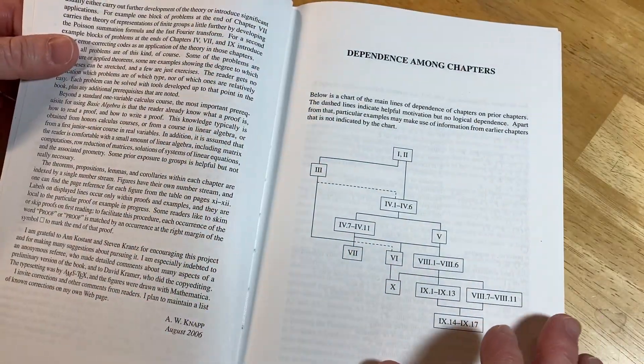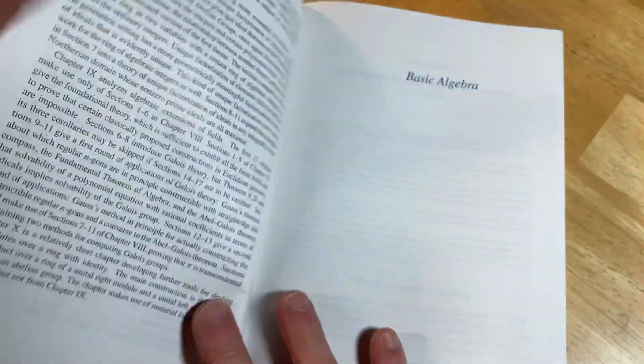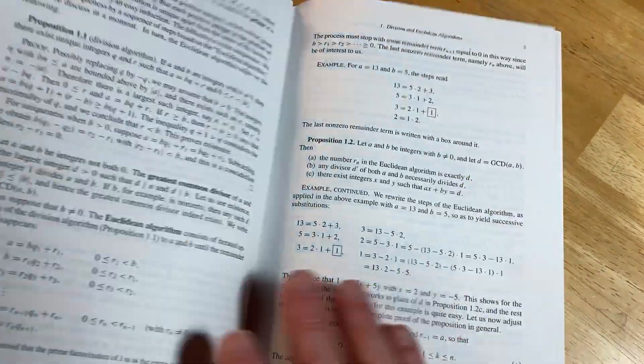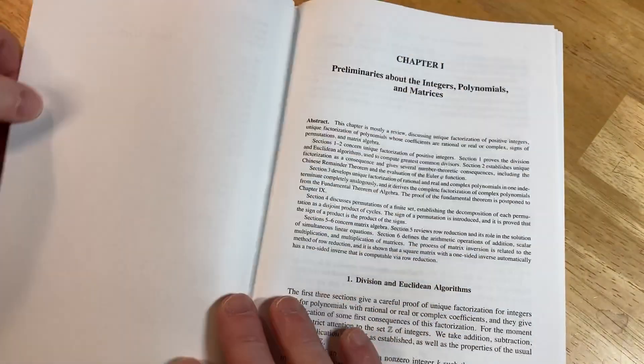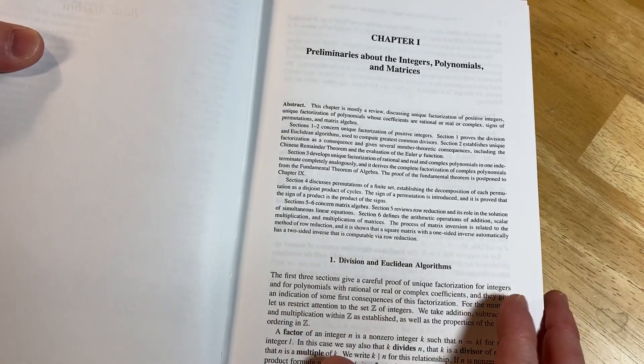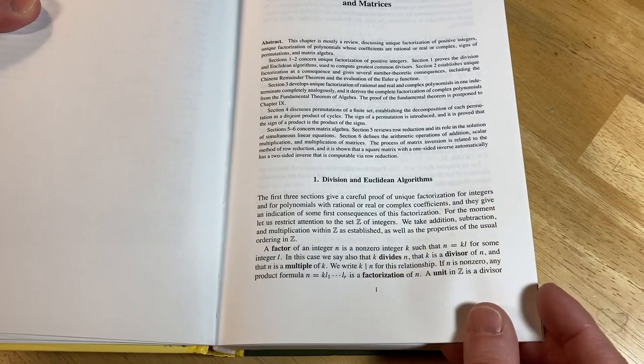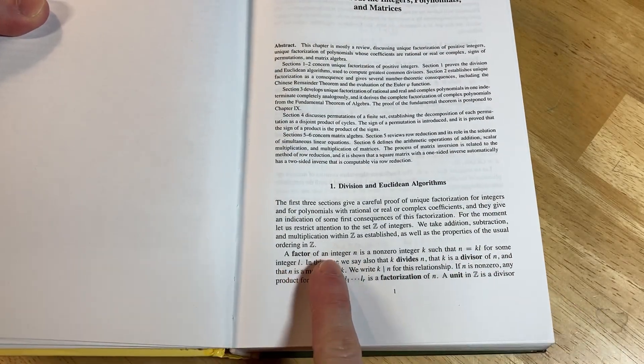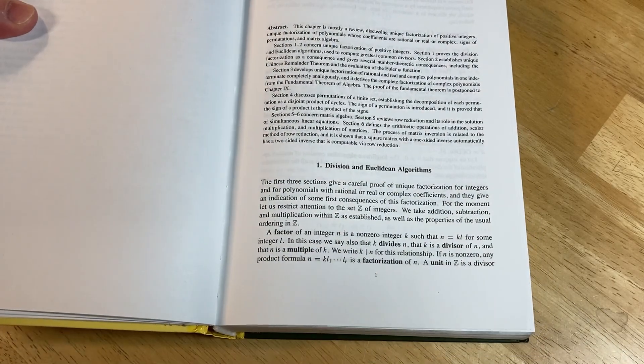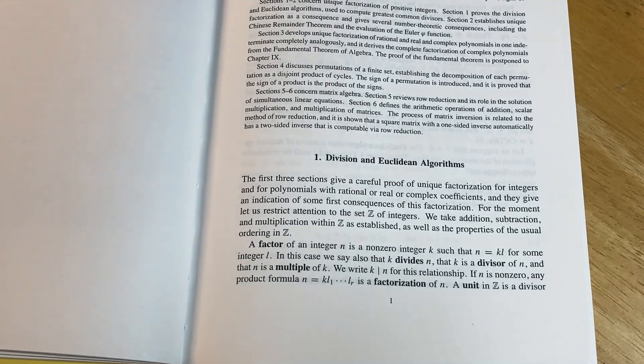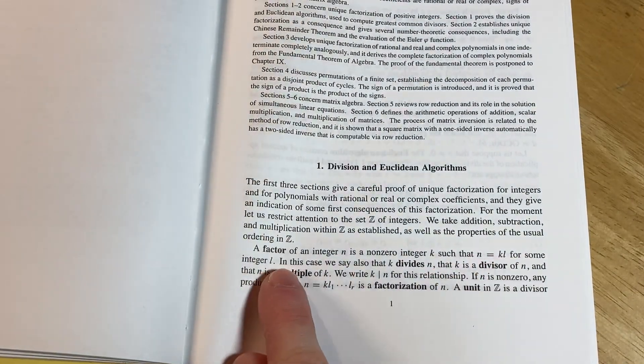I remember when I bought the book, I'm like "Basic Algebra?" It's a hardcore book. So here's some preliminaries and then it starts with division and Euclidean algorithms. A factor of an integer n is a non-zero integer k such that n equals kl for some integer l.